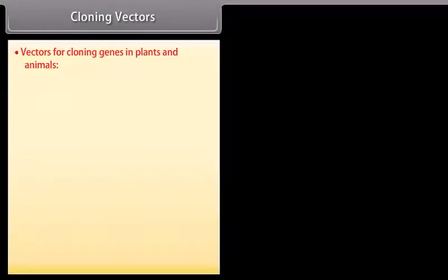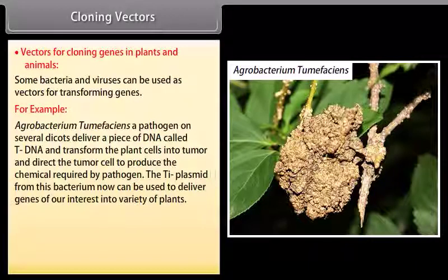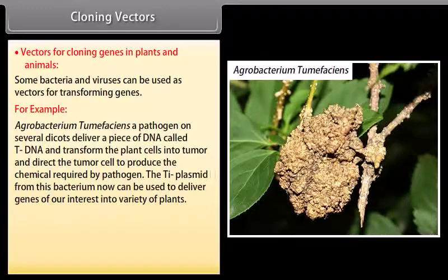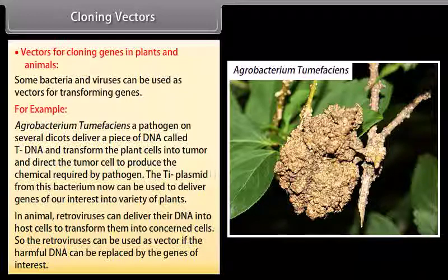Vectors for cloning genes in plants and animals. Some bacteria and viruses can be used as vectors for transforming genes. For example, Agrobacterium tumefaciens, a pathogen on several dicots, deliver a piece of DNA called T-DNA and transform the plant cells into tumor and direct the tumor cell to produce the chemical required by the pathogen. The Ti plasmid from this bacterium now can be used to deliver genes of our interest into variety of plants. In animal, retroviruses can deliver their DNA into host cells to transform them into concerned cells. So, the retroviruses can be used as vector if the harmful DNA can be replaced by the genes of interest.